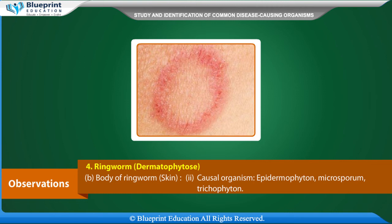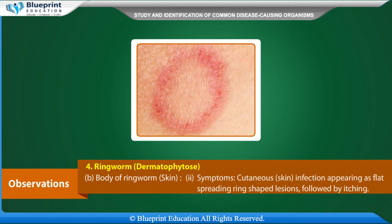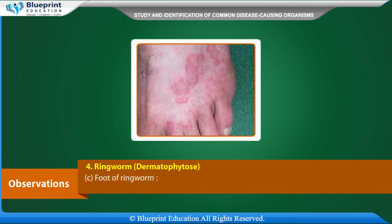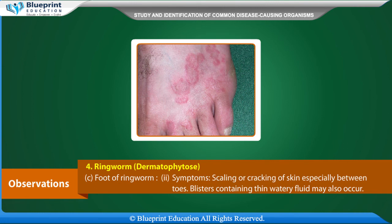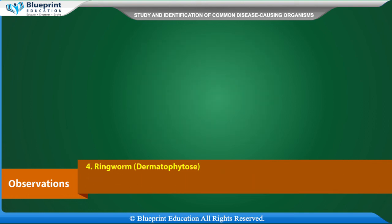Body ringworm (skin): the causal organisms are Epidermophyton, Microsporum, and Trichophyton. Symptoms include scaling or cracking of skin, especially between the toes. Blisters containing thin watery fluid may also occur.